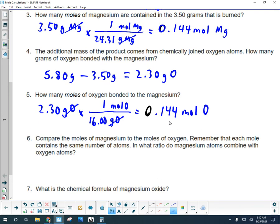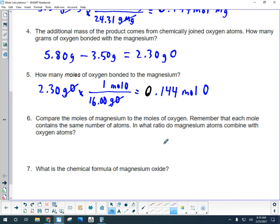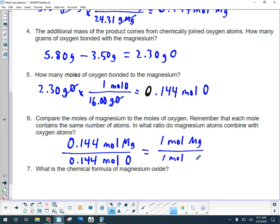So if we compare the moles of magnesium to the moles of oxygen, I can set up a ratio. I'm going to put magnesium on top just because it's listed first in the formula. And that reacted and joined with 0.144 moles of oxygen. So what I see here, if I divide it out, is basically a one-to-one ratio. So one mole of magnesium atoms is reacting with one mole of oxygen atoms.